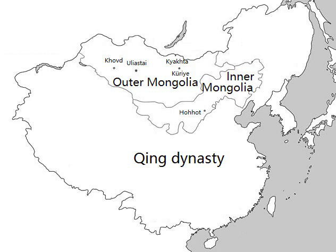Wai-men-gu was a territory of the Manchu-led Qing dynasty from 1691 to 1911. Its area was roughly equivalent to that of the modern state of Mongolia, which is sometimes called North Mongolia in China today, plus the Russian Republic of Tuva.